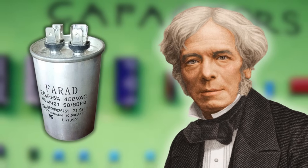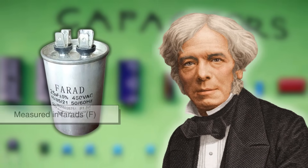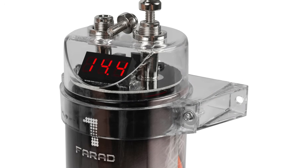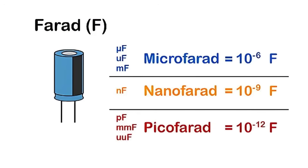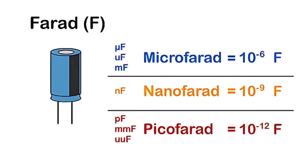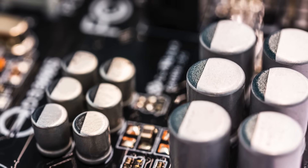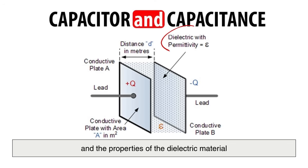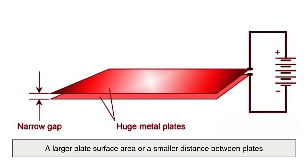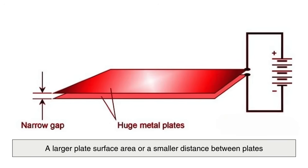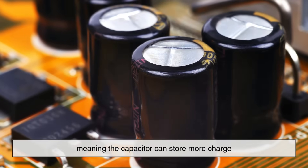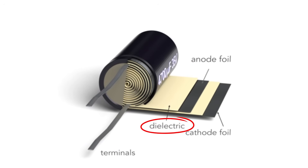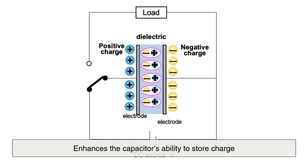The ability of a capacitor to store charge is measured in farads, named after the English scientist Michael Faraday. A one-farad capacitor can store a massive amount of charge, so in most practical applications we use microfarads, nanofarads, or picofarads. The capacitance of a capacitor depends on three factors: the surface area of the conductive plates, the distance between them, and the properties of the dielectric material. A larger plate surface area, or a smaller distance between plates, results in a higher capacitance, meaning the capacitor can store more charge. Similarly, using a dielectric material with a higher permittivity enhances the capacitor's ability to store charge.